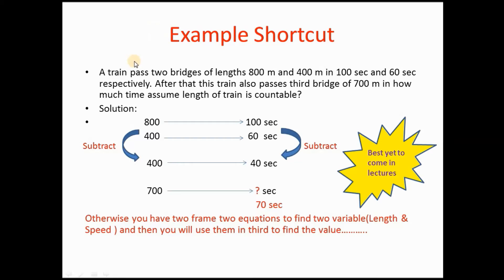Let us take an example. Suppose a train passes two bridges of length 800 meters and 400 meters in 100 seconds and 60 seconds respectively. We then have to find how long it takes the train to pass a third bridge of 700 meters. What we do is subtract: 800 minus 400 gives 400 meters, and 100 minus 60 gives 40 seconds. So the speed is 400 divided by 40, which is 10 meters per second. Therefore, to pass 700 meters it will take 70 seconds. This is the shortcut.